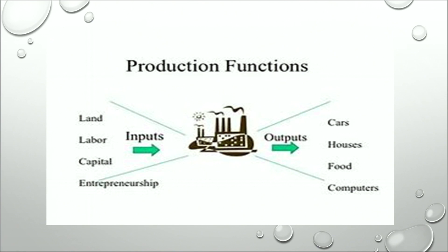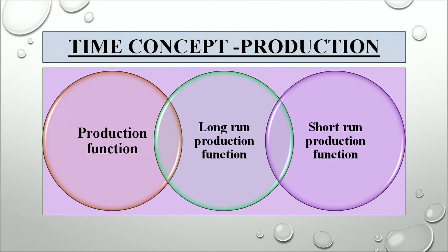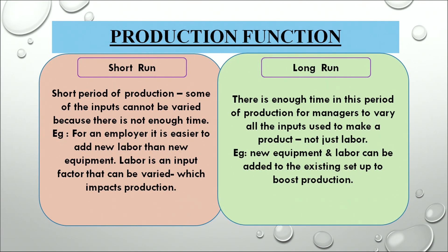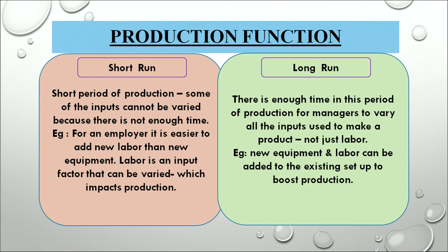The time concept in production is divided into two parts: long run production function and short run production function. The short run production function is where some inputs cannot be varied because there is not enough time. For example, it is easier for an employer to add new labor than new equipment, as labor is a variable input. But in the long run, there is enough time for managers to vary all the inputs — for example, new equipment and labor can both be added to boost production.